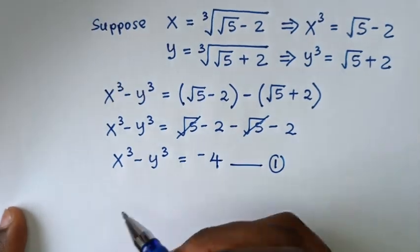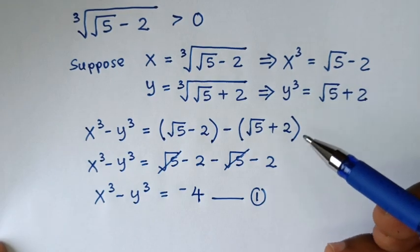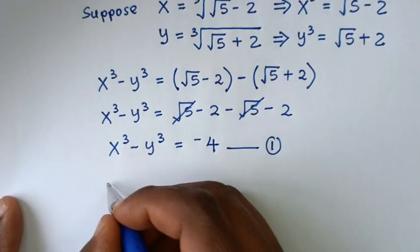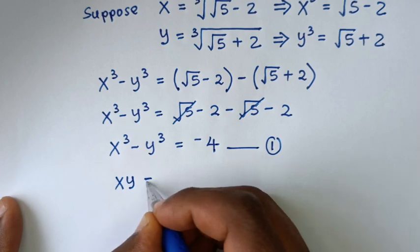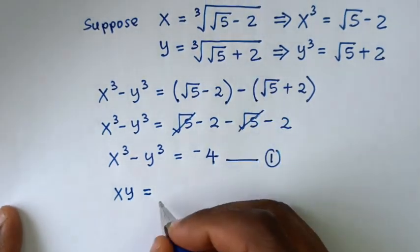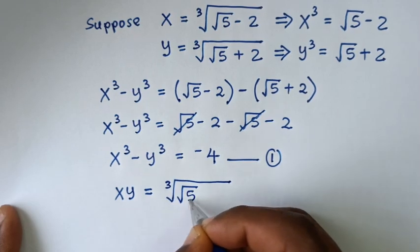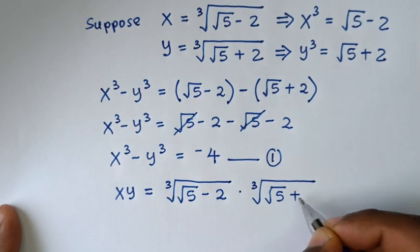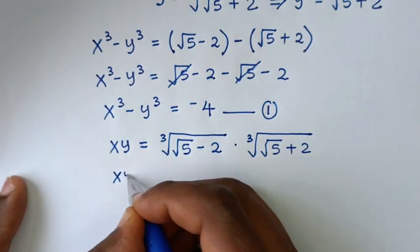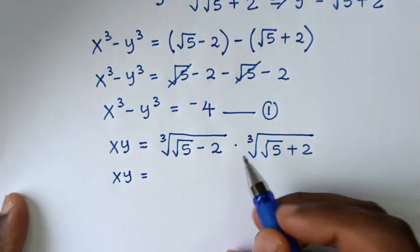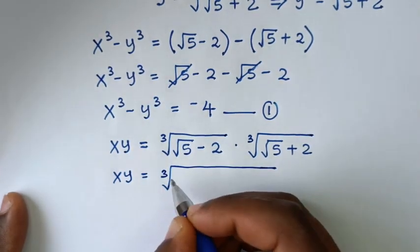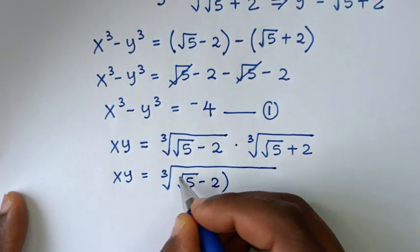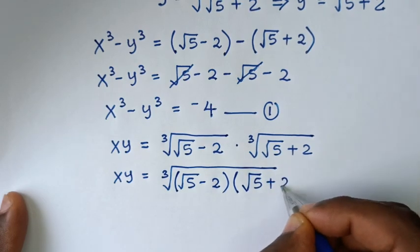In step 2, we'll take the product x times y. So xy equals cube root of (√5 − 2) times cube root of (√5 + 2). Combining under a common cube root, it becomes cube root of (√5 − 2)(√5 + 2).